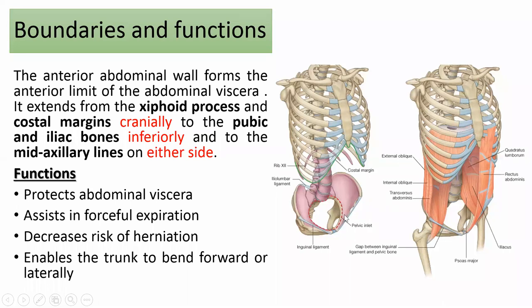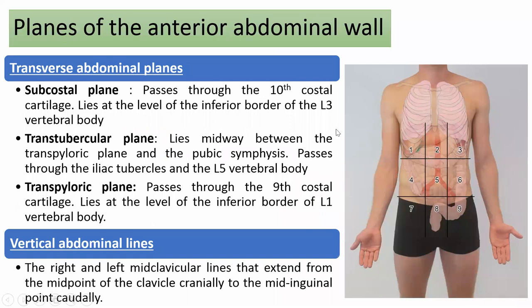The anterior abdominal wall forms the anterior limit of the abdominal viscera. It extends from the xiphoid process and the costal margins cranially to the pubic and iliac bones inferiorly, and to the mid-axillary line on either side. Its functions include protecting the abdominal viscera, assisting in forceful expiration, decreasing risk of herniation, and enabling the trunk to bend forward or laterally.